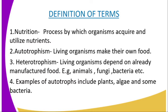Autotrophism is a mode of nutrition in which a living organism manufactures its own complex food substances from simple substances. These simple substances are carbon dioxide, water, light, or chemical energy, obtained from the immediate environment. Living organisms that make their own food are known as autotrophs — examples in our environment are plants.